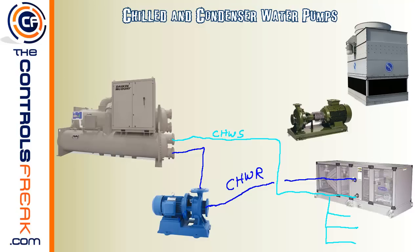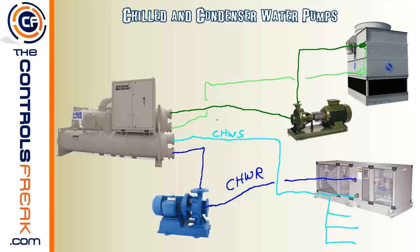On the condenser water side, hot water comes out of the chiller, enters the pump, and is pushed up to the top of the cooling tower. That hot water goes across the fill, gets cooled down by the fan, and drops into the basin. From the basin, it gets sucked back out and returned to the chiller. This completes the condenser water loop. We label these the condenser water return — leaving the chiller — and the condenser water supply — coming from the cooling tower.